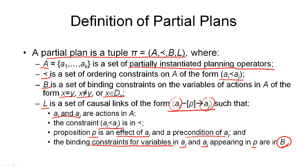In short, remember this: a partial plan is a four-tuple consisting of actions, ordering constraints, variable bindings, and causal links, where a causal link connects a producer to a consumer via a protected proposition P. That's what a partial plan looks like, and the search nodes in our search space will be partial plans.